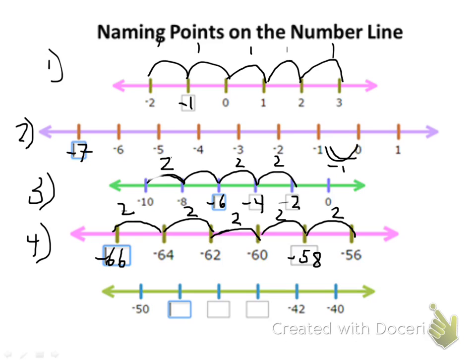This last one here — try it on your own first, and then click play and you'll see the answer. I looked here and saw that the interval is 2. So we go from 40 to 42, to negative 44, to negative 46, to negative 48. That's number 5.